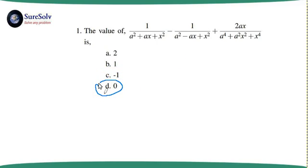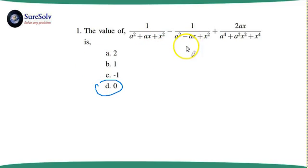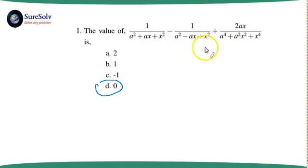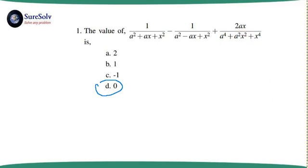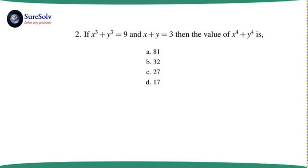This is all about the first problem. What seemed different at first — we identified the pattern and commonality between the two denominators, and then found the result was exactly the same as the third term's denominator.